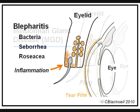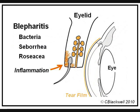Blepharitis is inflammation of the eyelids from various causes. It has a significant effect on the tear film and ocular surface. Inflammation involving the front part of the eyelid around the base of the eyelashes usually comes from overgrowth of the normal bacteria that live on the skin. That can cause irritation of the skin and affect the tear film. For example, one of the things the bacteria make is an enzyme that turns the oil into soap, which is irritating and makes small foamy bubbles in the tear film. Blepharitis can also go along with seborrhea and rosacea.